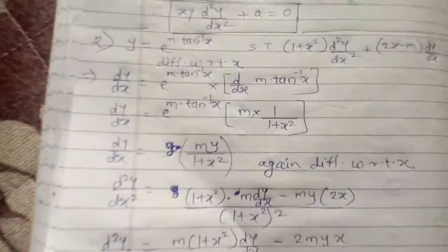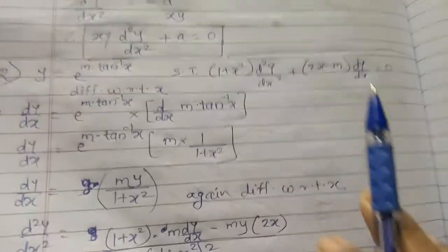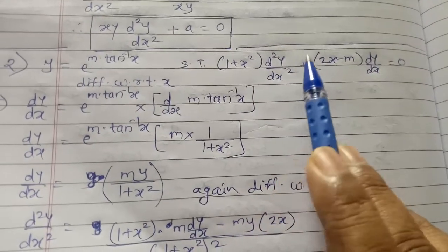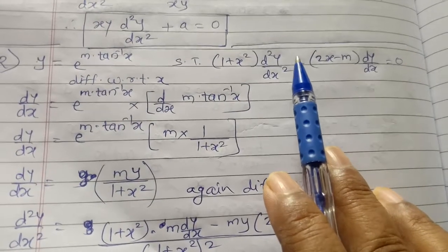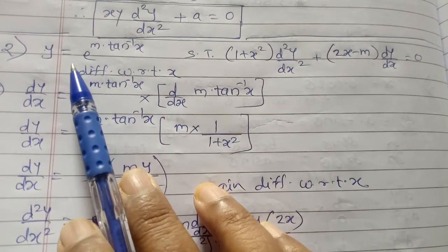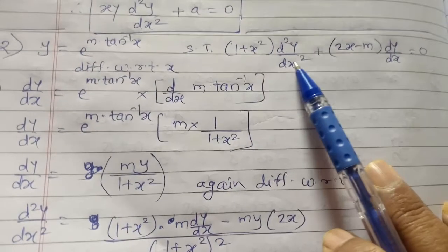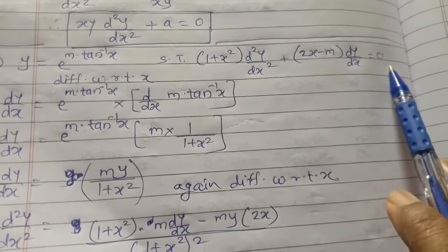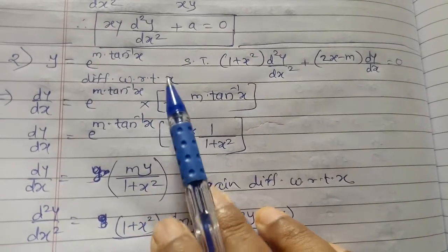Now see example number 2. These examples are very critical and you have to give very careful attention to solving them. We are given the equation y equals e^(m·tan⁻¹x). We have to show that (1 + x²)·d²y/dx² + (2x - m)·dy/dx equals 0.